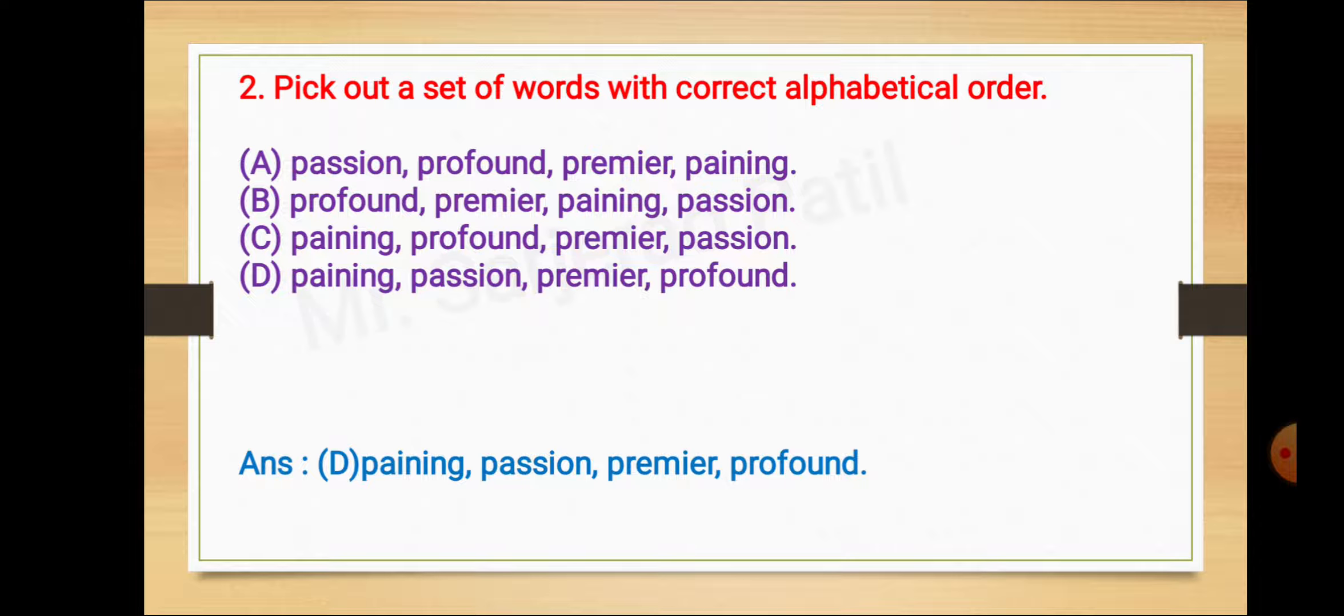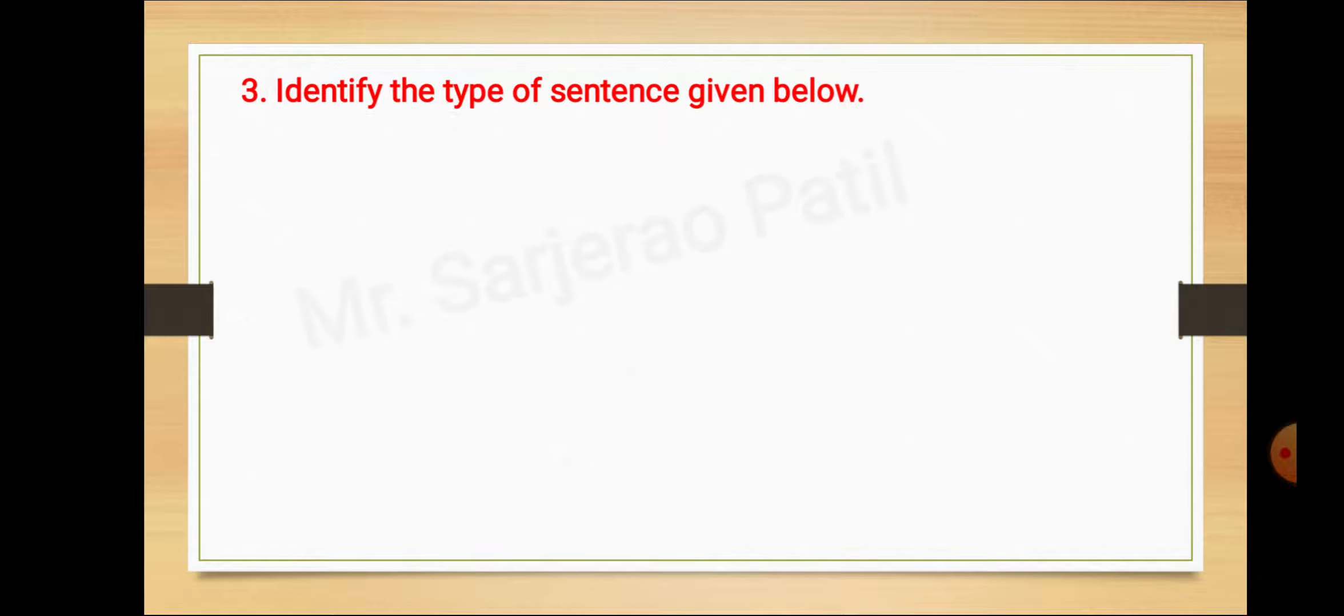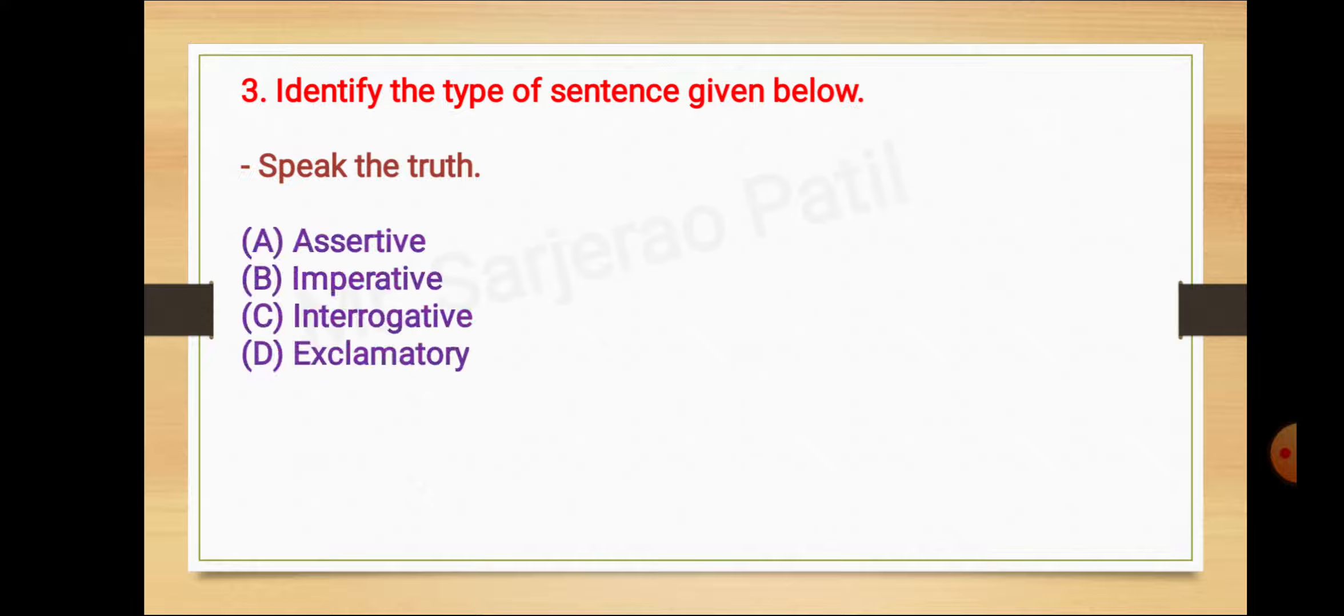Question number 3: Identify the type of sentence given below. Speak the truth. A assertive, B imperative, C interrogative, D exclamatory.